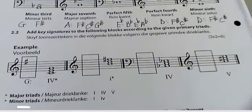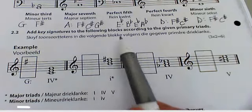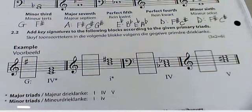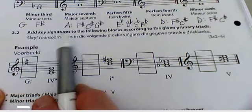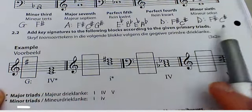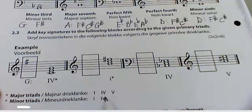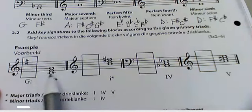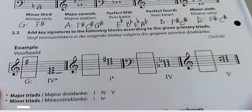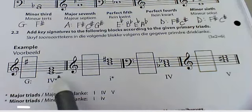Lots of students struggle with adding key signatures to the following blocks, and also writing the primary triads. They say: add key signatures to the following blocks according to the given primary triads. They show you that one, four, and five will always be big in major, and in minor I will have a small one and a small four. Here they give the example: G major, because they say the bottom note is the fourth — G, A, B, C. So C is the fourth of G major.